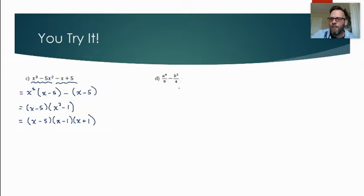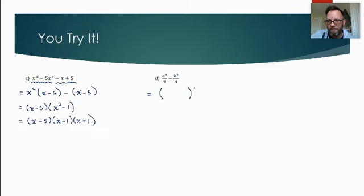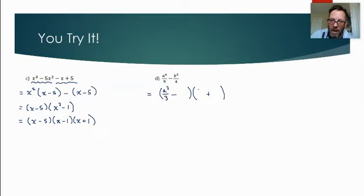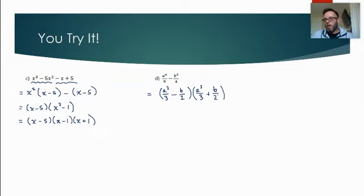Looking at (d): I see two things separated by subtraction, so I'm thinking difference of squares. Each term is a perfect square. The root of a-to-the-sixth over 9 is a-cubed over 3, since (a³/3) times itself gives a⁶/9. The root of b-squared over 4 is b over 2, since (b/2) times itself gives b²/4. So it factors as (a³/3 minus b/2)(a³/3 plus b/2) — no complicated steps, just difference of squares.